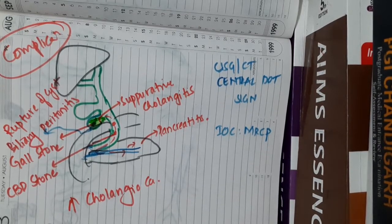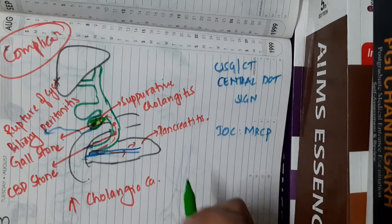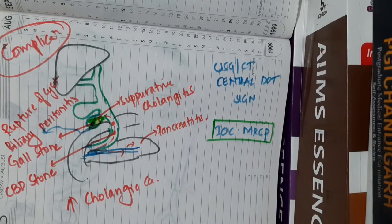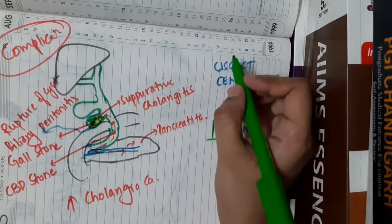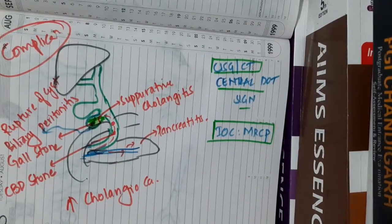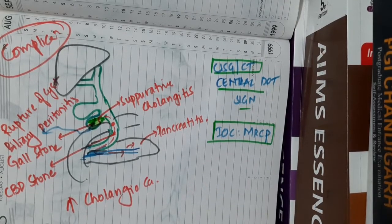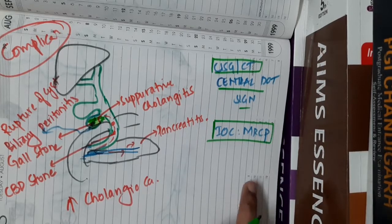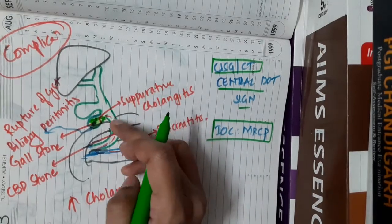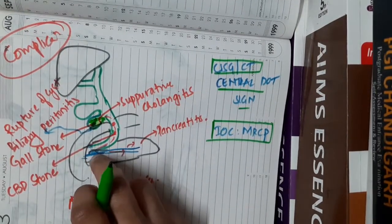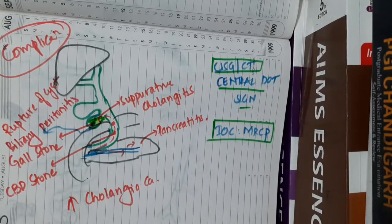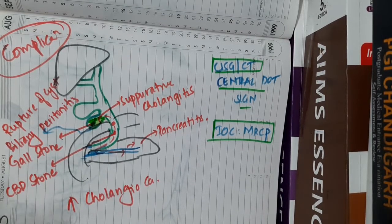The investigation of choice for choledocal cyst is MRCP, which allows assessment of the biliary system, pancreatic duct, and the pancreaticobiliary junction — which is mostly anomalous in these patients. On USG or CT scan, the central dot sign can be seen.